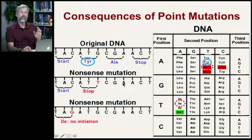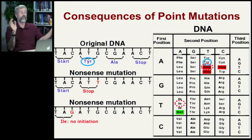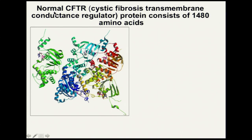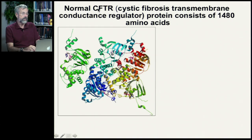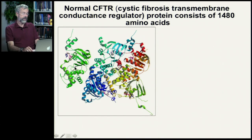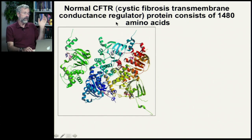With these kinds of nonsense mutations, it's not just one little base pair and one amino acid that's different — there's a whole region of things that's going to be wrong or missing. Here's an important protein known to be susceptible to nonsense mutations: the normal CFTR protein, which consists of 1,480 amino acids in a long chain, each one just so. CFTR stands for cystic fibrosis transmembrane conductance regulator.